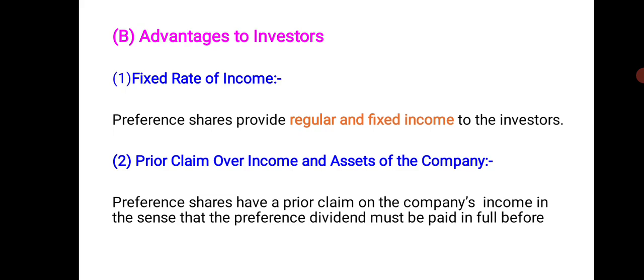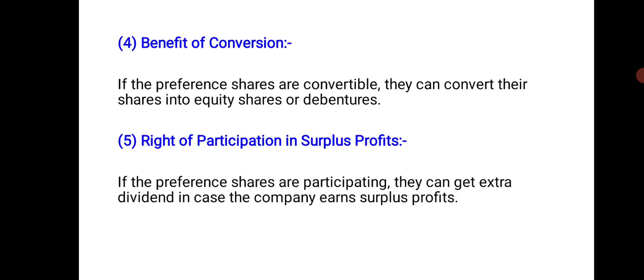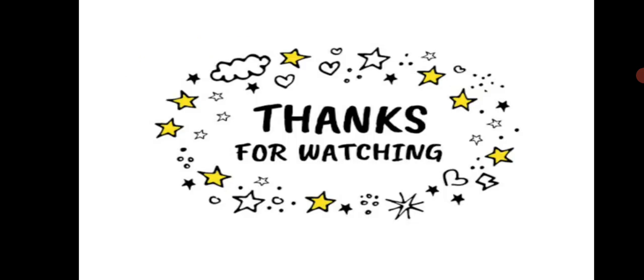So these were the advantages to investors: fixed rate of income, prior claim over income and assets of the company, voting rights on matters affecting their rights and on resolutions when dividend is outstanding for a specific period, benefit of conversion, and right to participate in surplus profits. I hope you liked this video. Thanks and have a wonderful day.